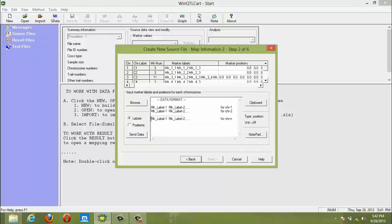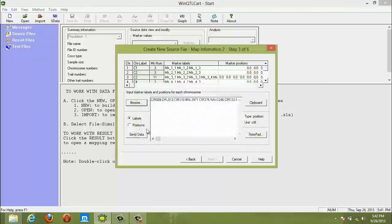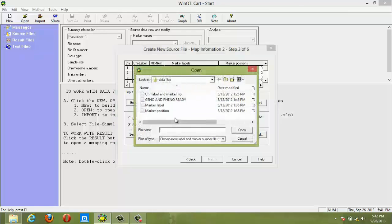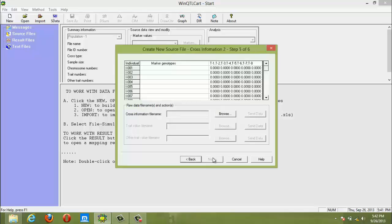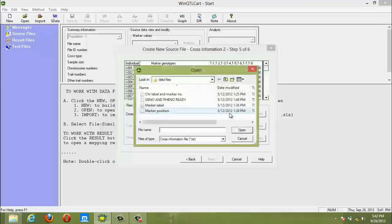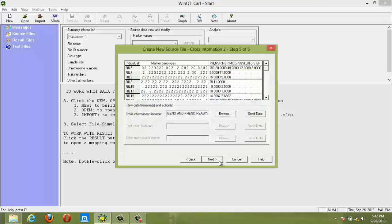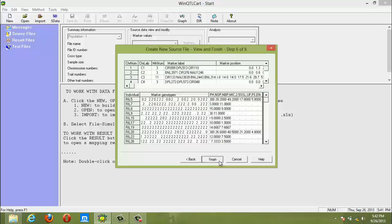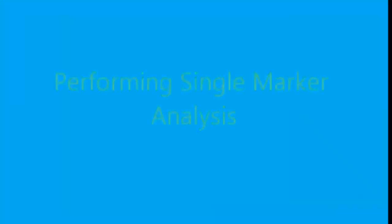Select label option for marker label data file importing. Browse marker label data file and click send option. Click position option for marker position data file importing. Browse for geno and pheno data file. Click send data. Click next and finish. A message box, a source file is created, will appear.